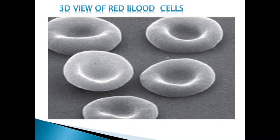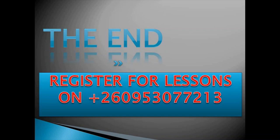This image shows a 3D view of red blood cells taken using a light compound microscope. This concludes our lesson on microscopy and histological techniques — how we prepare tissues for viewing under a microscope and the types of microscopes used. Thank you for staying tuned. Register for lessons at Excellent Grades Academy. Don't forget to subscribe and hit the notification button.